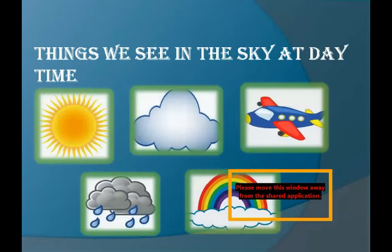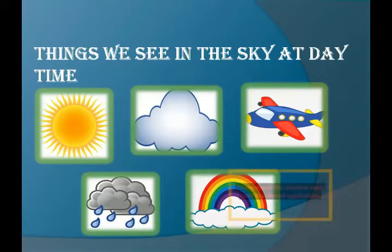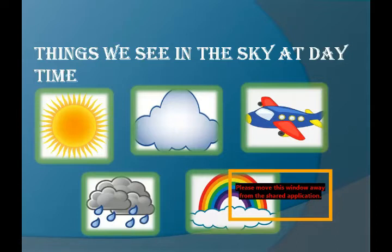As the sun rises in the sky, the earth becomes bright and full of light. On a sunny day, you see a clean sky, a bright sun, and a bright sky. Except this, we also see different things in the sky during the daytime. Let's get to know about those things which we see in the sky at daytime.